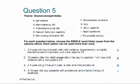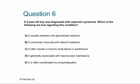Let's move away from nephritis and think about nephrosis, synonymous with nephrotic syndrome. Question 6: A 5-year-old boy was diagnosed with minimal change nephrotic syndrome. Which of the following are true? A) it usually presents with generalised oedema, B) it commonly improves with steroid treatment, C) it often results in chronic renal failure in adulthood, D) it's generally associated with macroscopic haematuria, and E) it's often complicated by encephalopathy.